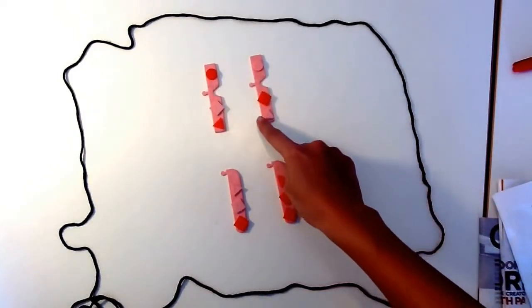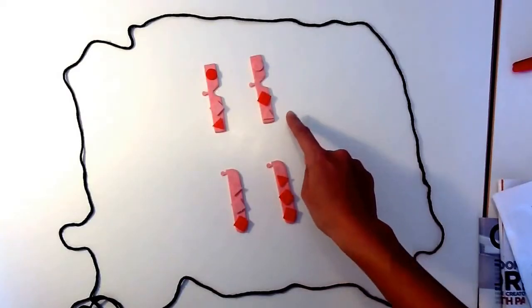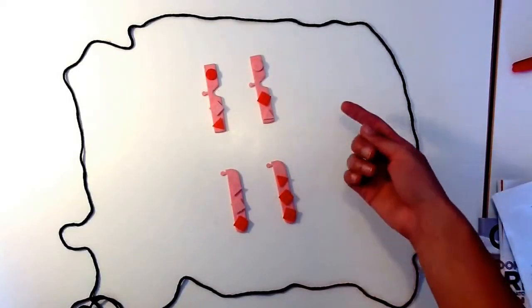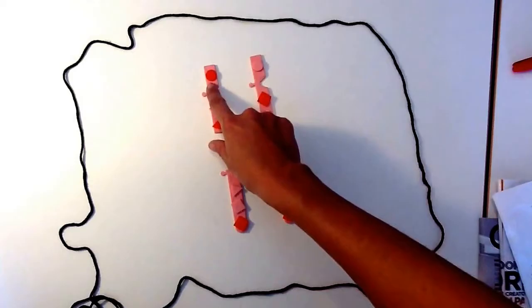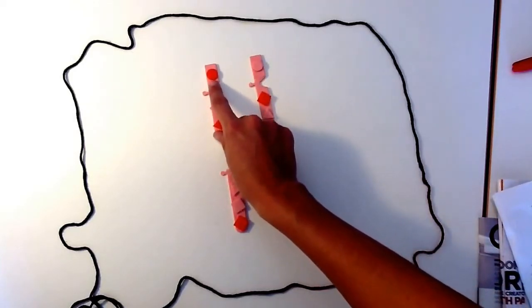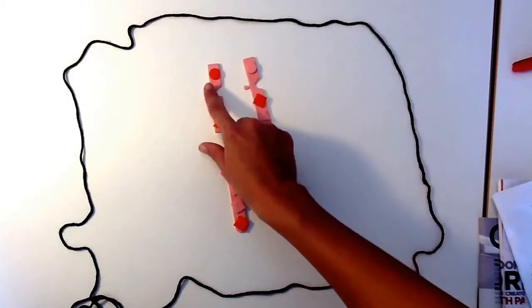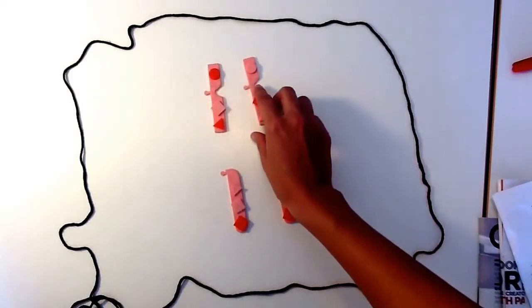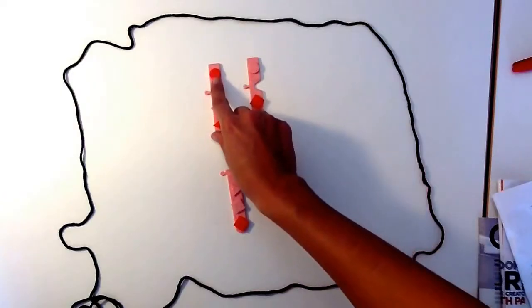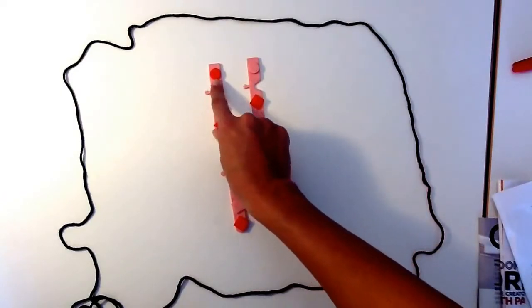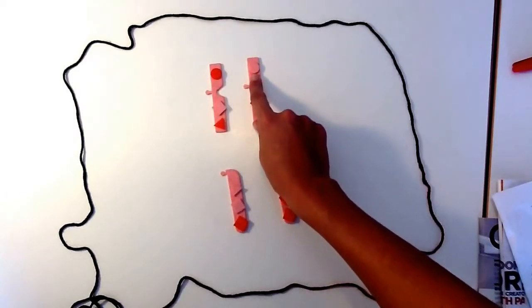These two chromosomes will have information for the same genes but might carry different characteristics of that gene. So for example if this dark circle represents eye color, they both have the gene for eye color at this locus, which means at this position, but this one might have the gene for red eyes and this one might have the gene for white eyes.